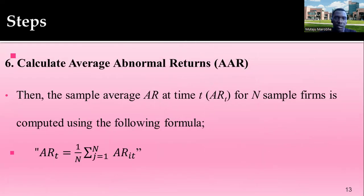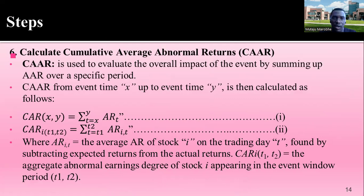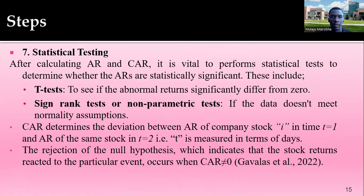Then calculate the Average Abnormal Returns (AAR), which is the sample average of abnormal returns at time t across n sample firms. Then proceed to calculate the Cumulative Average Abnormal Returns (CAAR), which evaluates the overall impact of the event by summing the average abnormal returns over a specific period. Finally, perform statistical tests — such as a t-test or a sign-rank non-parametric test — to determine whether the abnormal returns are statistically significant.